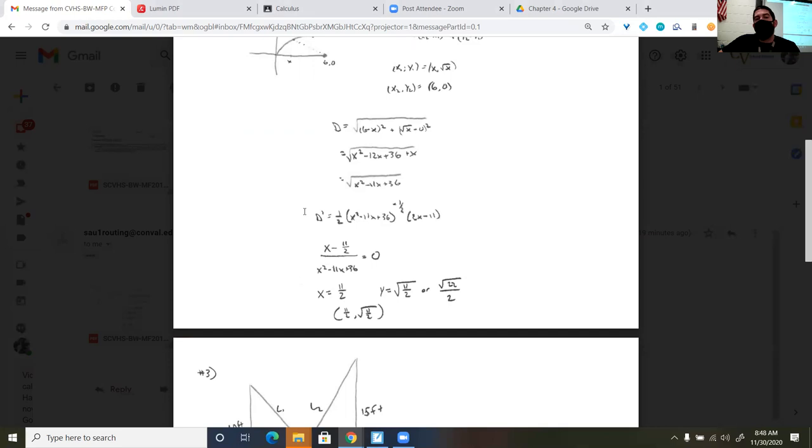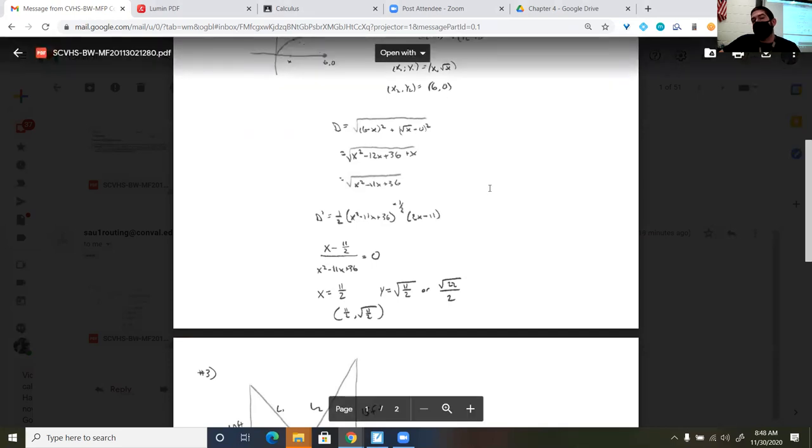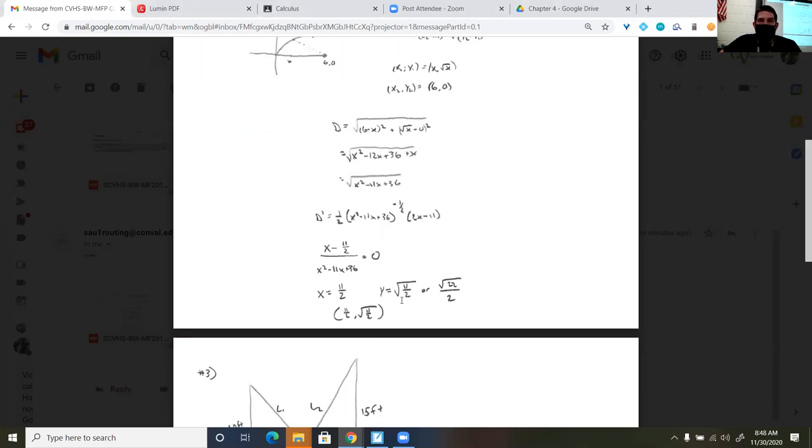So I was only left with x equals 11 halves. And I plugged 11 halves back into my output, which was the square root of x. So that gave me the square root of 11 halves. Calculus is kind of finicky. Sometimes it rationalizes the denominator, sometimes it doesn't.